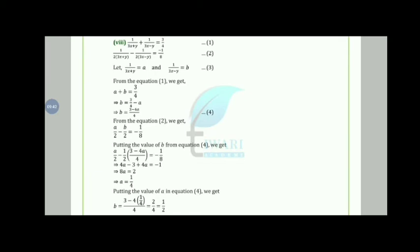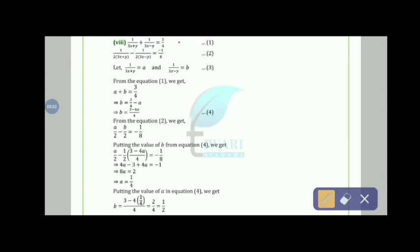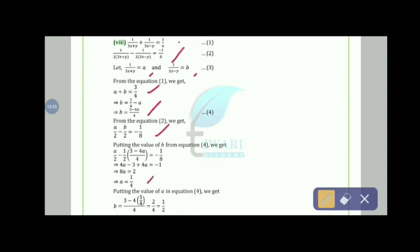In the eighth part: 1/(3x+y) + 1/(3x−y) = 3/4 and 1/(2(3x+y)) − 1/(8(3x−y)) is given. Let 1/(3x+y) = a and 1/(3x−y) = b. From equation 1: a + b = 3/4, so b = (3 − 4a)/4. From equation 2: a/2 − b/8 = −1/8. Substituting: a/2 − (3 − 4a)/8 = −1/8, giving a = 1/4.